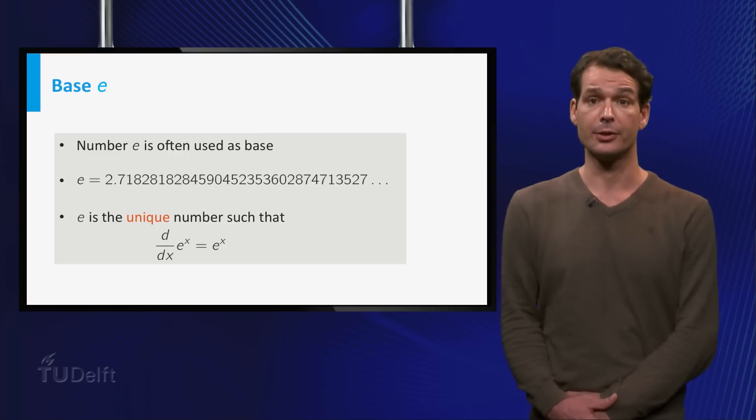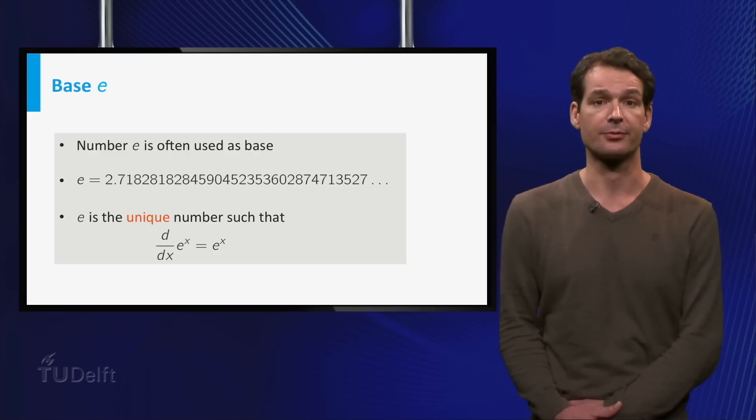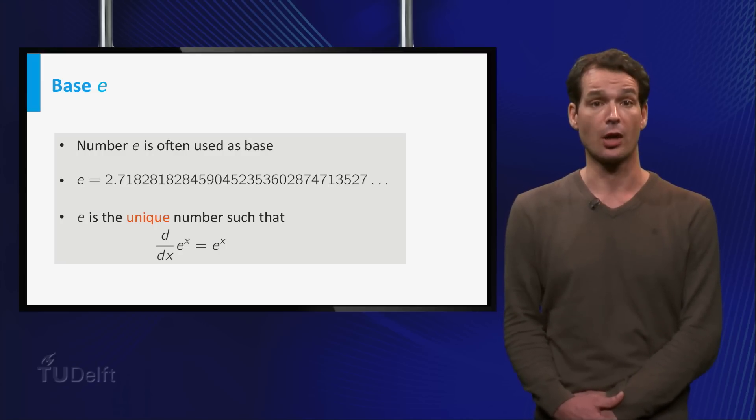A base that is often used for exponential functions is the number e, which is approximately 2.718. Later on in week 5, we will see that the function e to the power x has the special property that it is its own derivative.